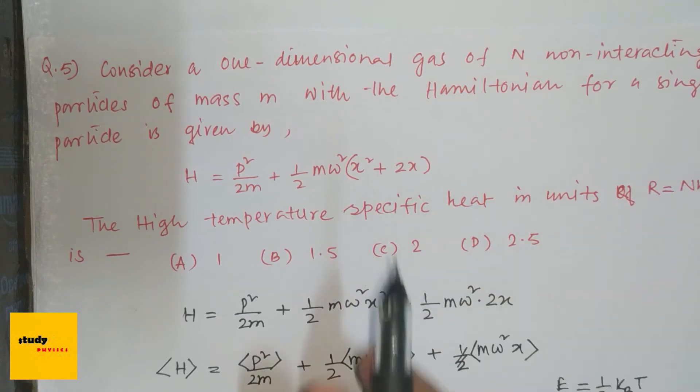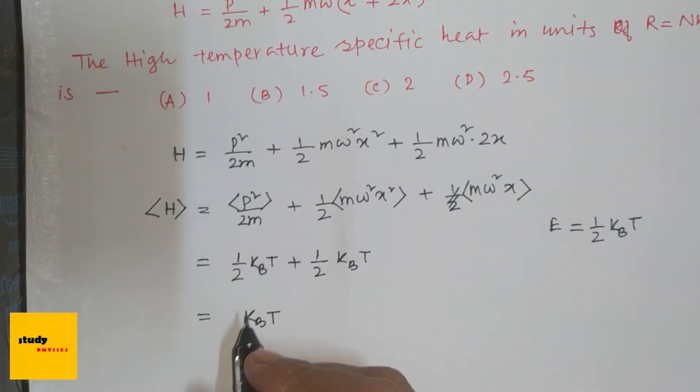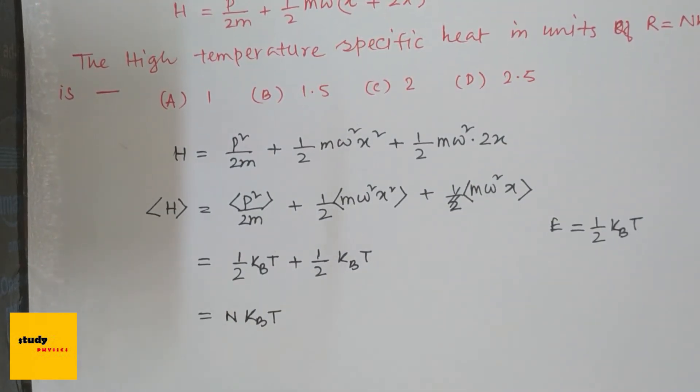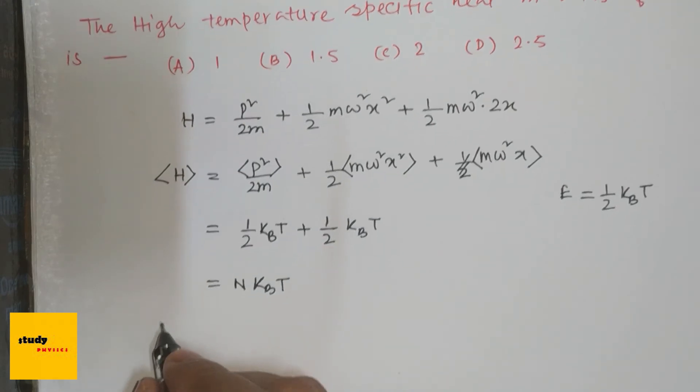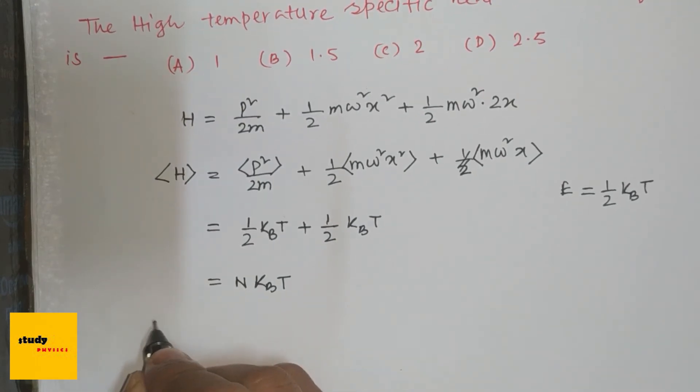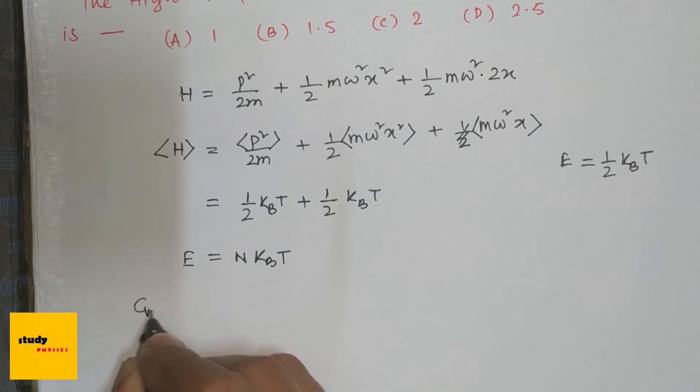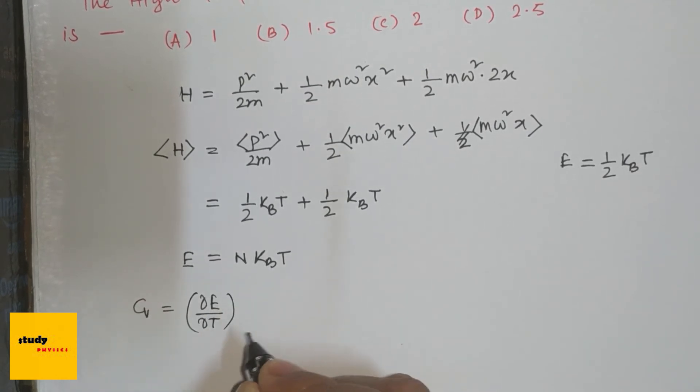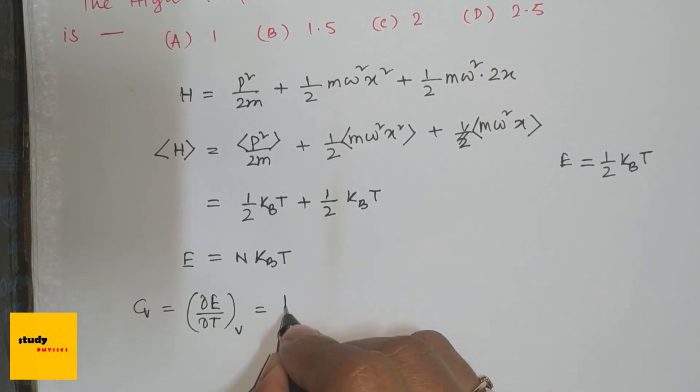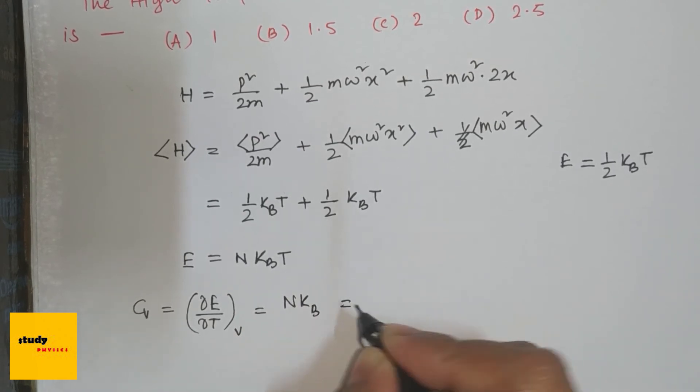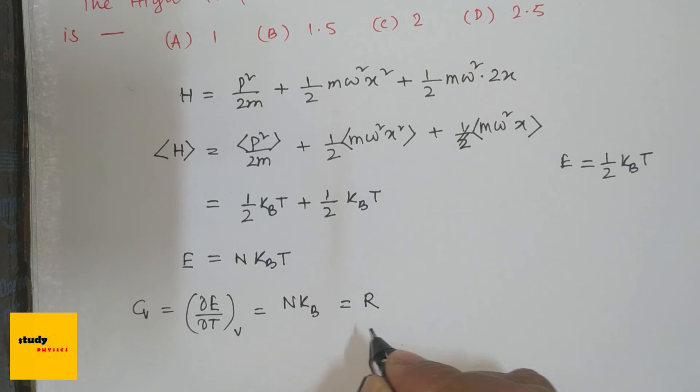So suppose this is for N non-interacting particles. Then from this, the specific heat—we know specific heat is del E del T at constant V—so N k_B, which is R, R that means 1 into R.